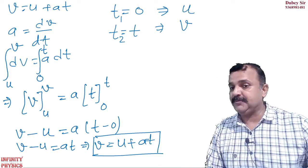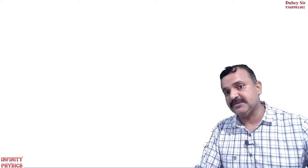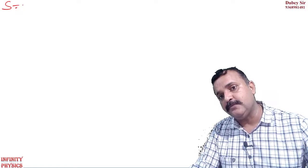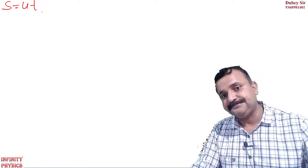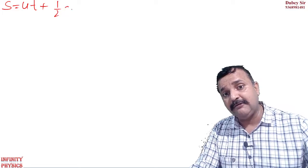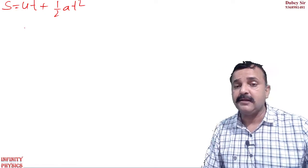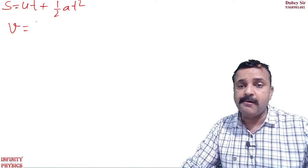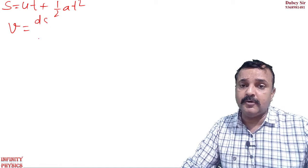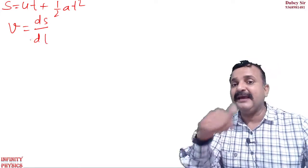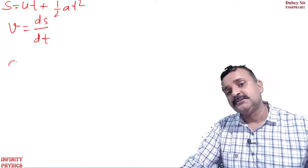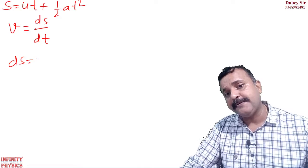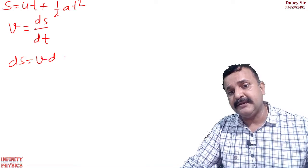Aate hai second equation pe. How we can derive the second equation? Second equation aap pata hai S is equal to U T plus half A T square hai. Isko differentiate karne ke liye aap equation use karo. V is equal to Ds upon Dt ko use karo. Tho Ds is equal to V Dt.